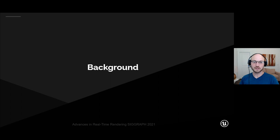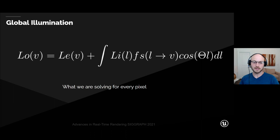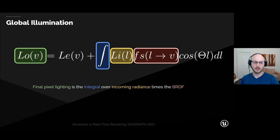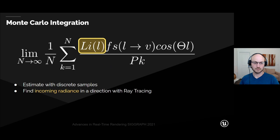So first, let me describe the problem that we're trying to solve in real-time. This is the equation that we have to solve for every single pixel on the screen. In plain English, the final pixel lighting is the integral over the incoming radiance times the BRDF. We're going to use the Monte Carlo formulation of the integral and estimate it with discrete samples, finding the incoming radiance in a direction with ray tracing.